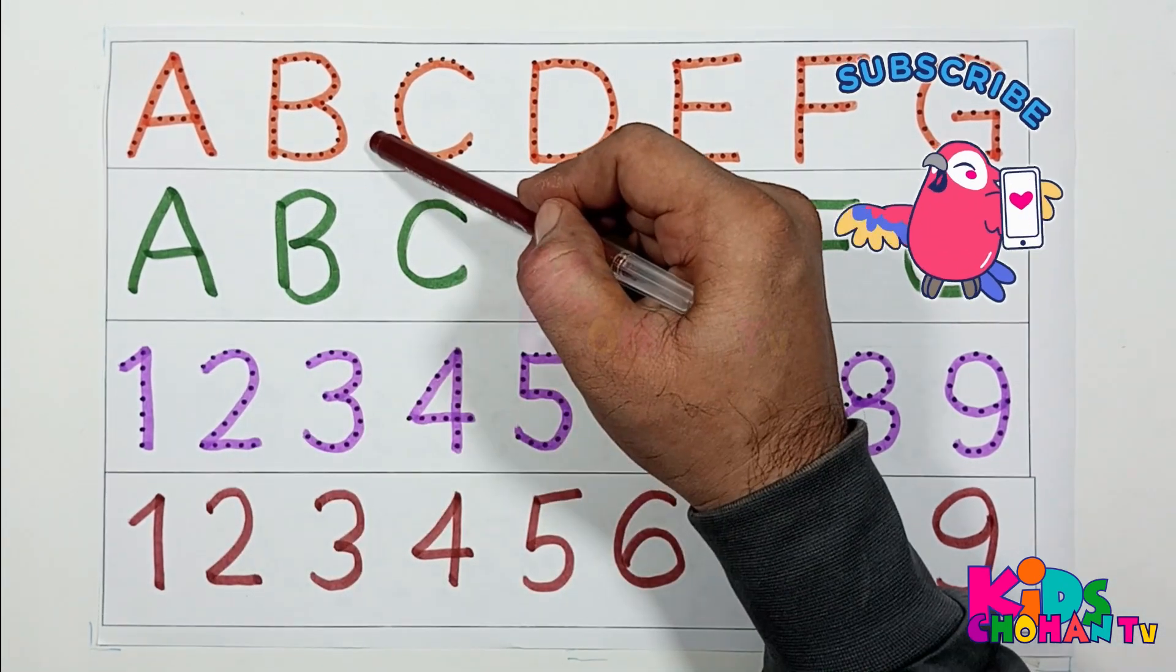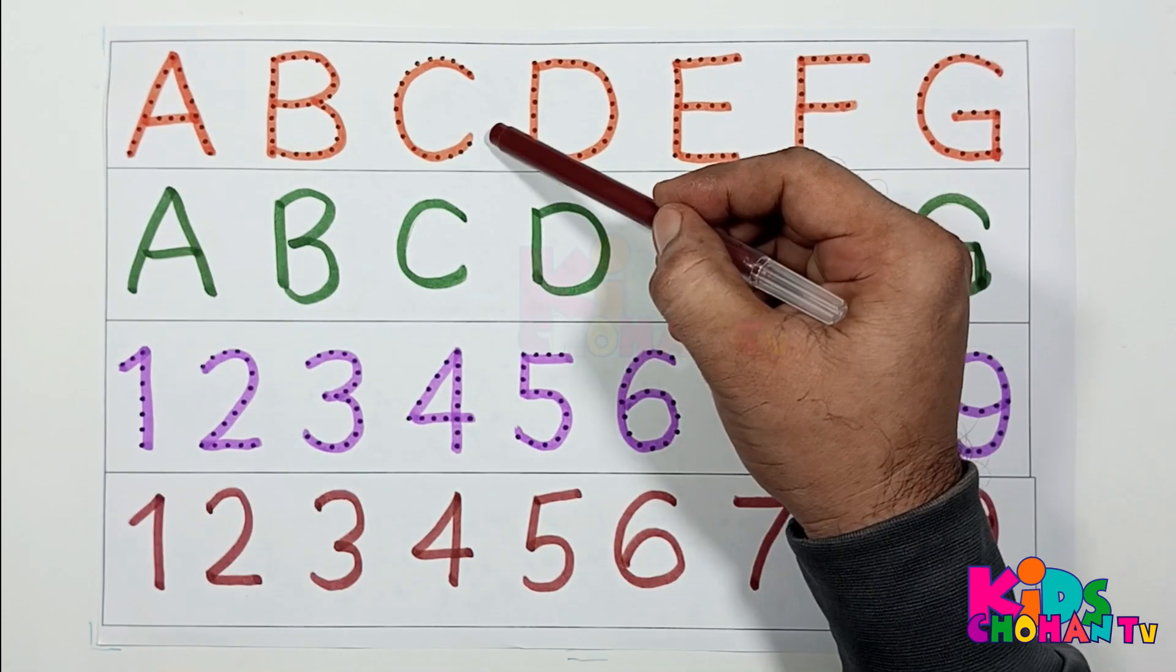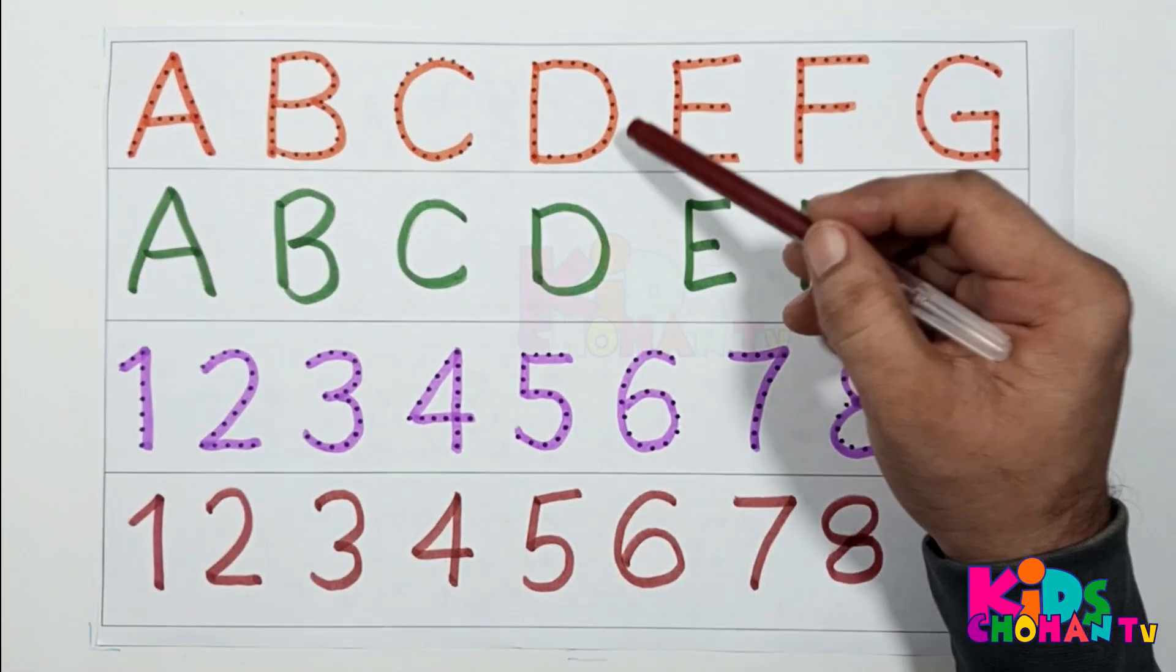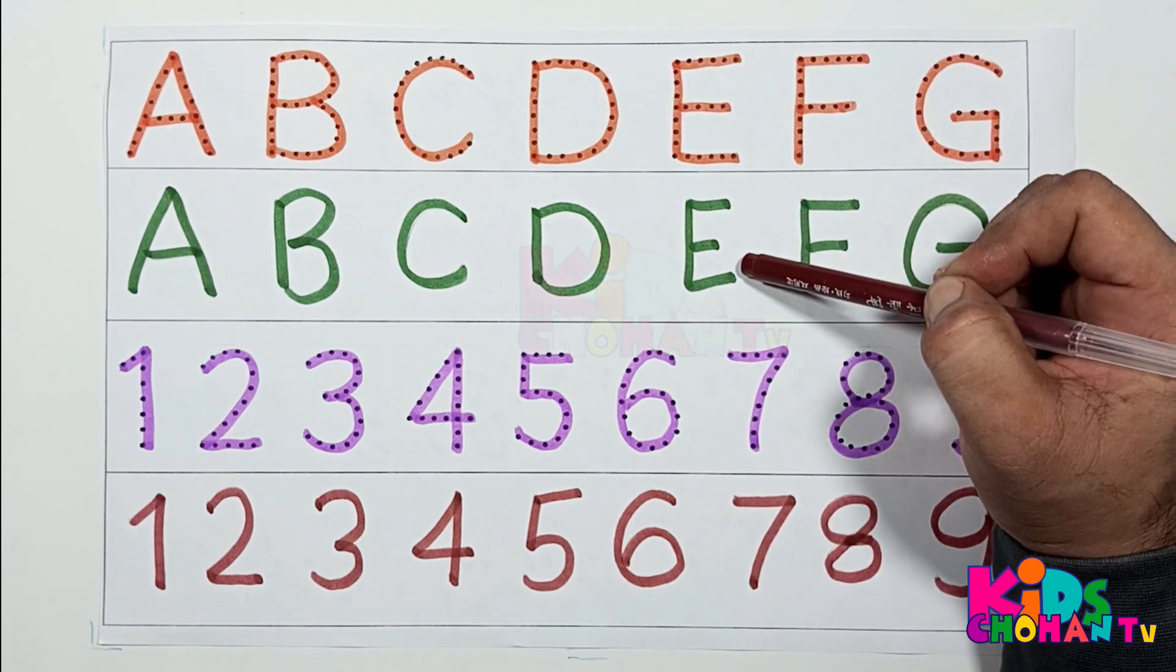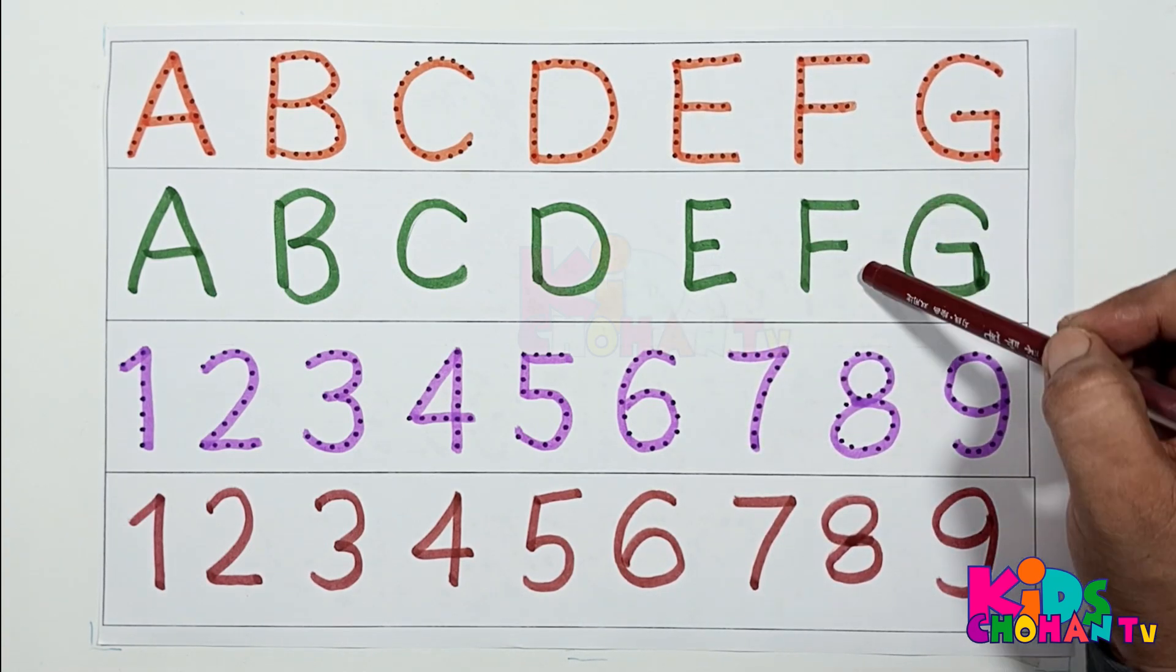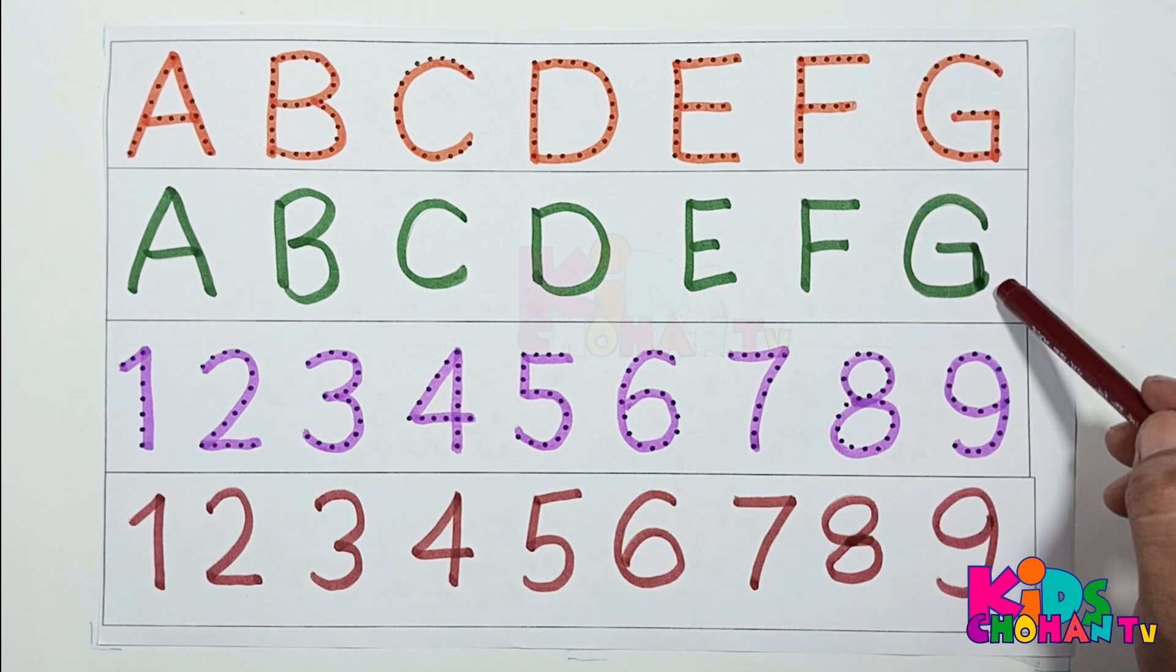A, A for apple. B, B for ball. C, C for cat. D, D for dog. E, E for elephant. F, F for fish. G, G for goat.